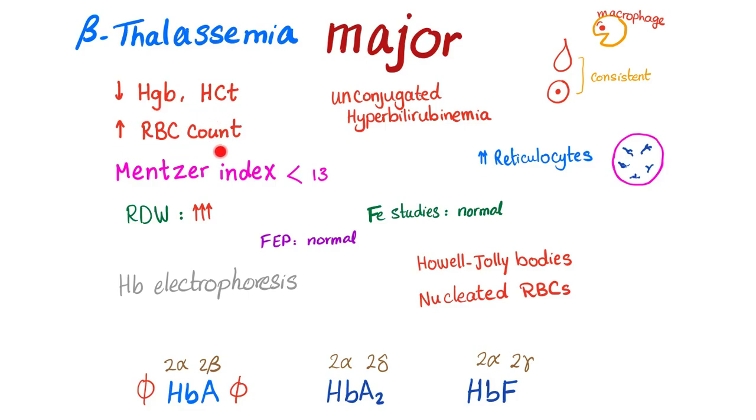Same thing: low hemoglobin and hematocrit, increased RBC count, Mentzer index again less than 13. RDW here is high. Why? Because there is hemolysis, so the bone marrow will try to produce new cells. Gradually, at the beginning they will be normocytic, and they will begin to become microcytic, so RDW will start to increase due to increased variation.